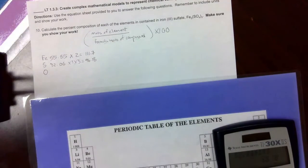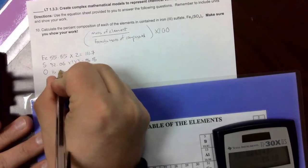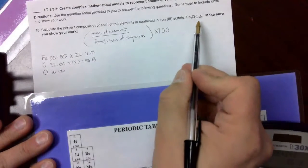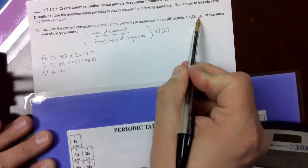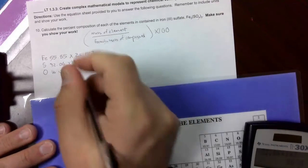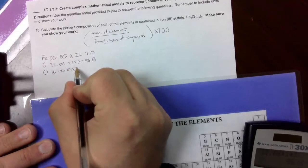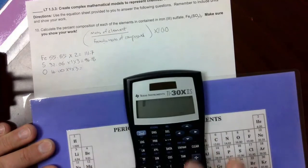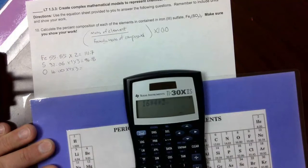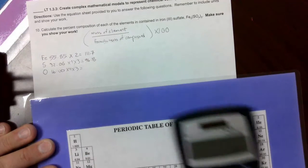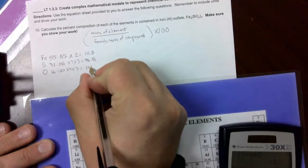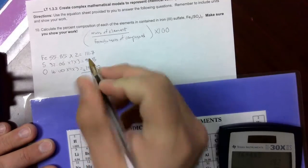And then oxygen we know and love is 16.00 times subscript on oxygen, 4, times the subscript outside the parentheses, 3. So times 4 times 3.